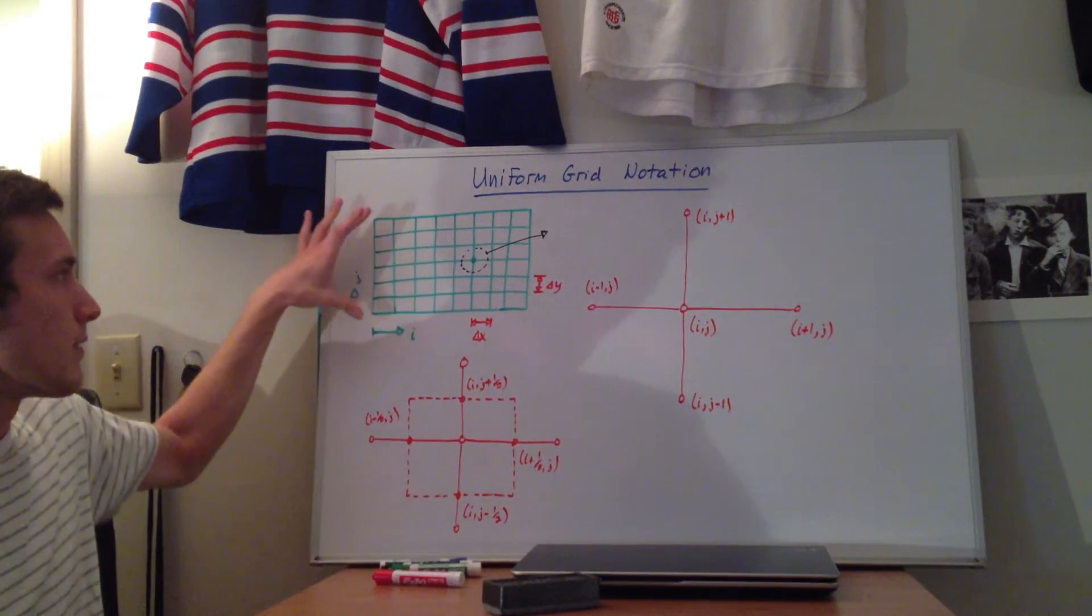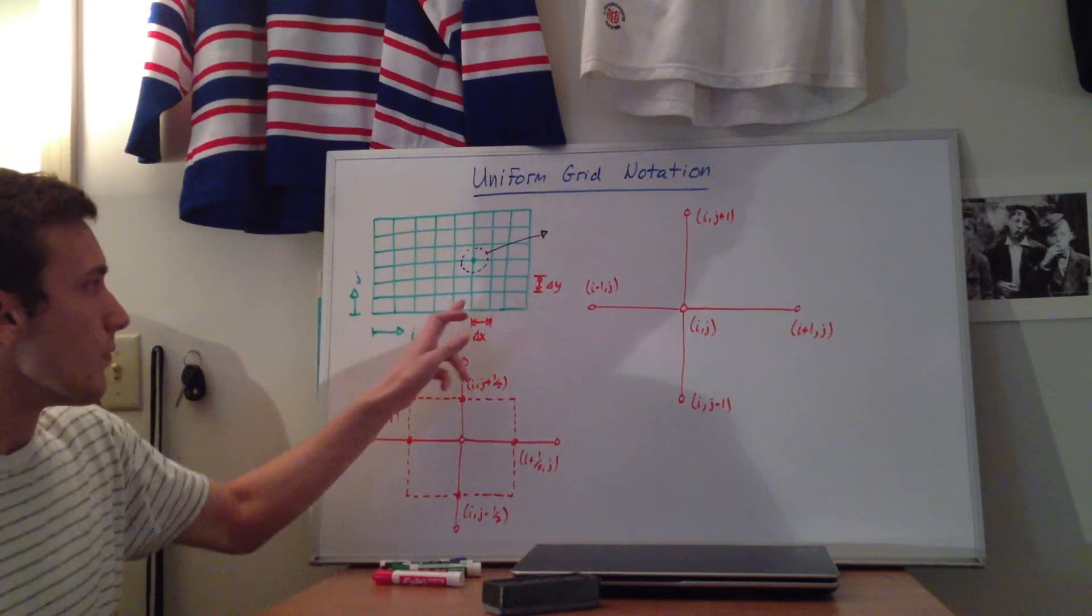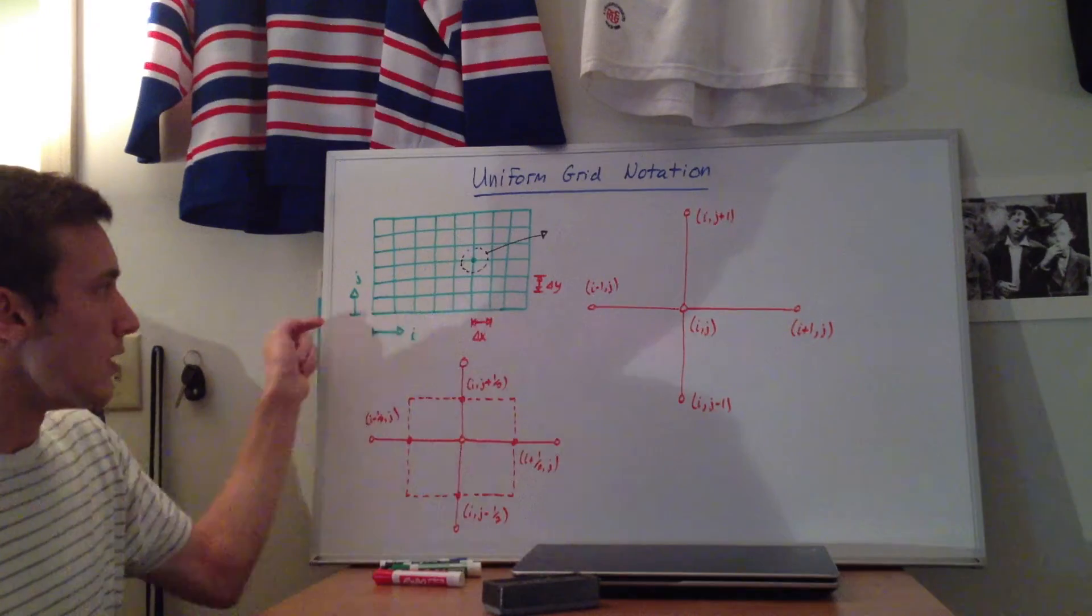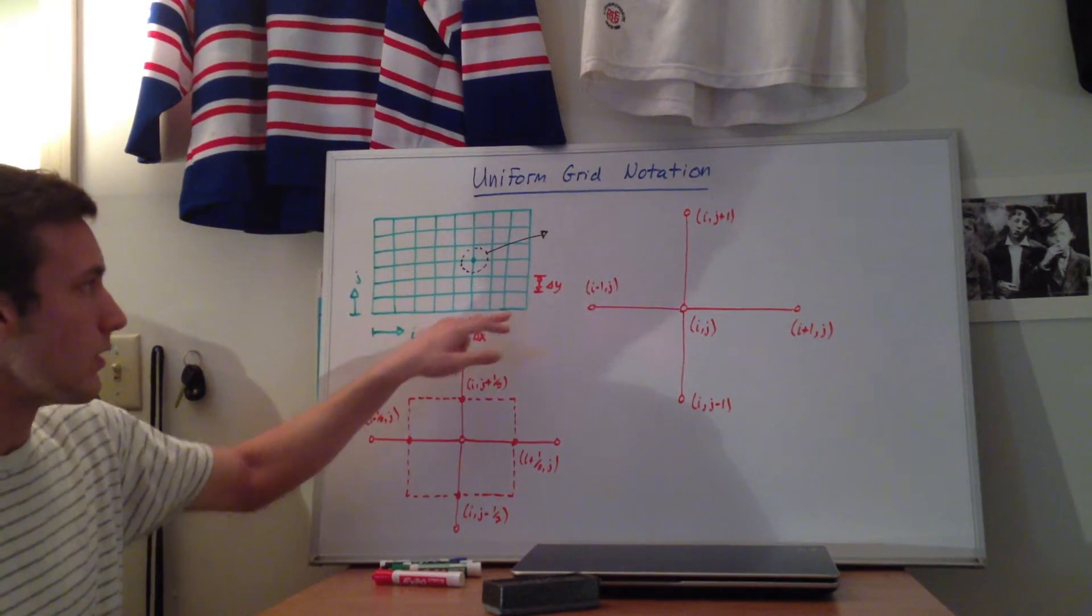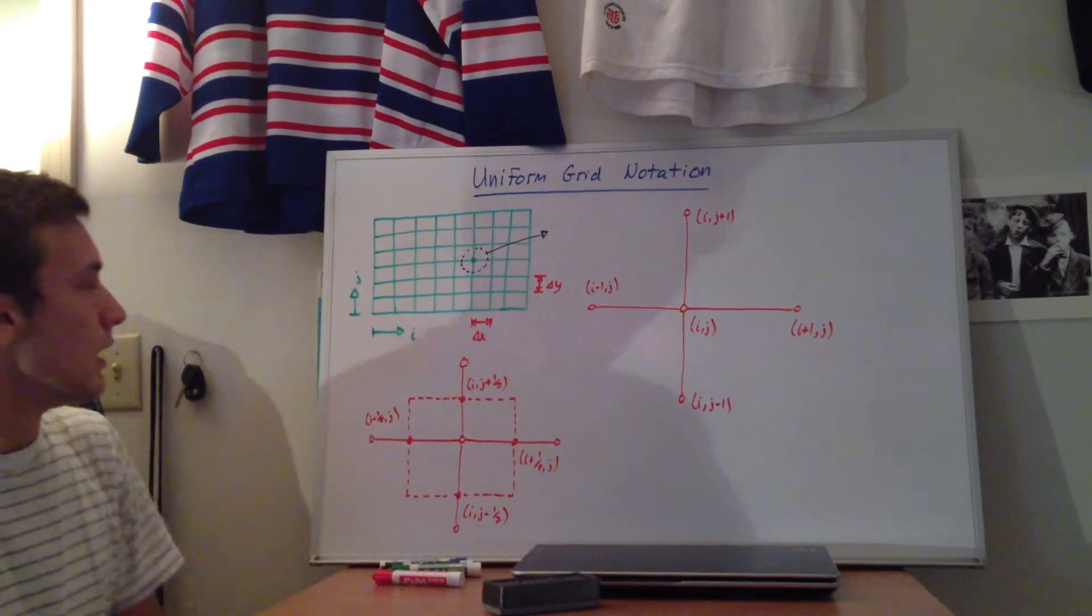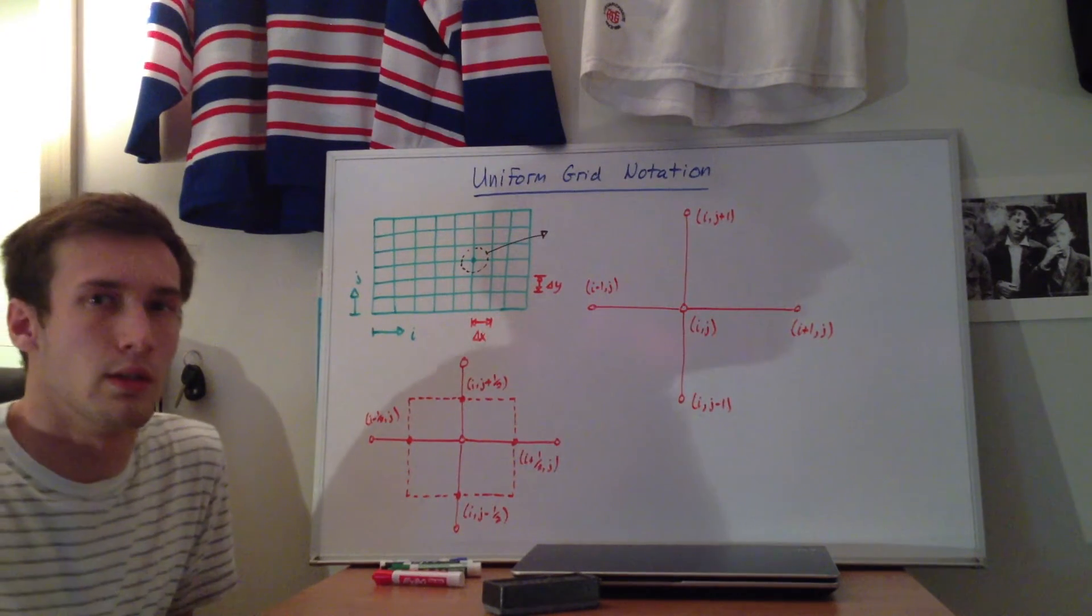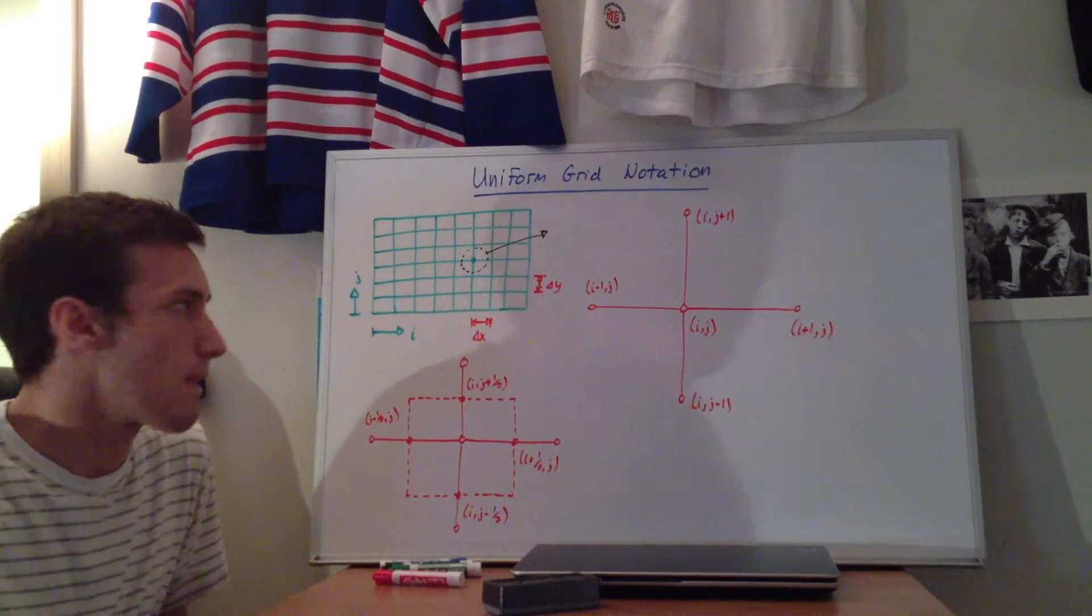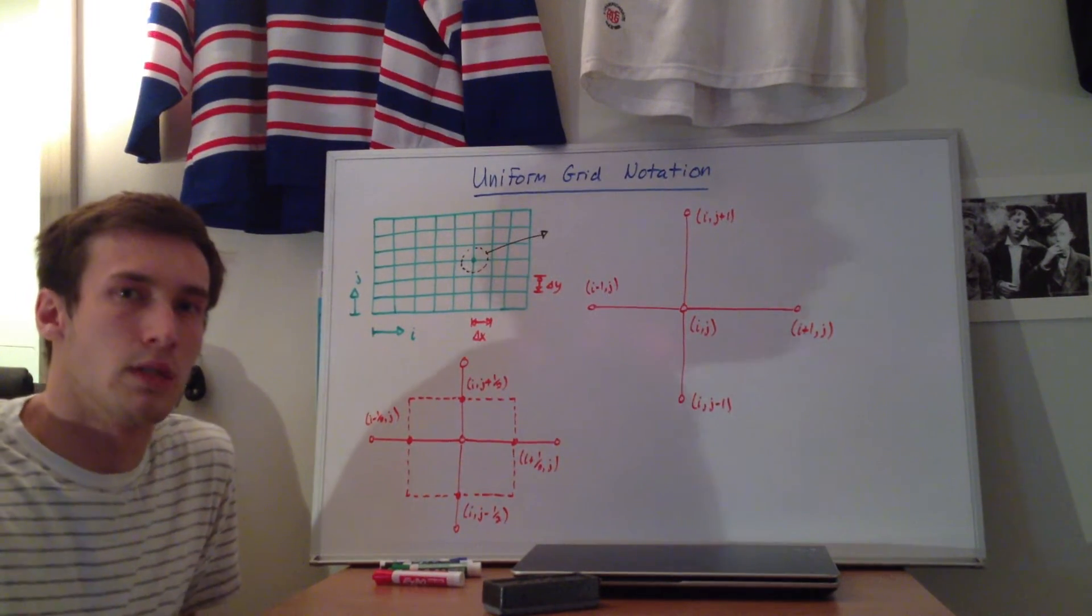So here we have a uniform rectangular square grid. The distance between every single point in the x direction or i direction is delta x. The distance between the grid points in the y direction or j direction is going to be delta y. So in terms of the notation that I'll be using, especially when you're looking at the finite difference derivatives and stuff that you're going to be plugging into the general conservation equations.